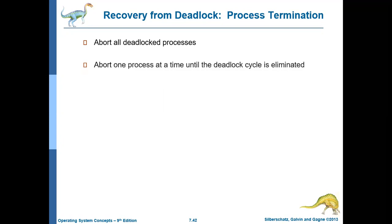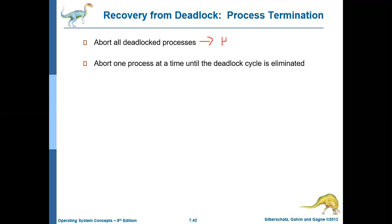The second method is to abort one process at a time until the deadlock cycle is eliminated. In the first method, the cost is very high — it has a huge expense. But the second method, if you see, it has a considerable overhead.